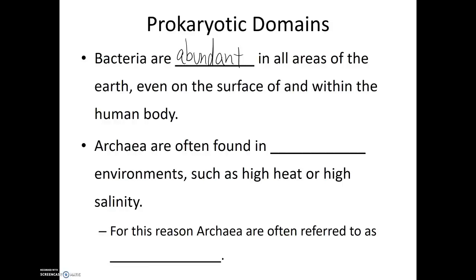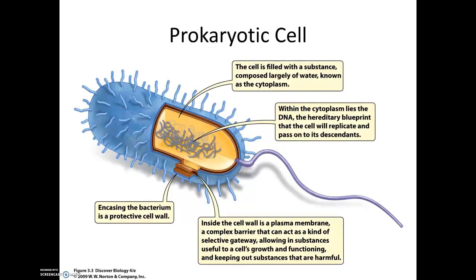Now archaea are also found in abundant areas, but they are most likely to be found in extreme environments — environments that aren't normally conducive to life, such as high heat or high salinity. It's for this reason that archaea are often referred to as extremophiles. When we look at the general diagram of prokaryotic cells, they do not have internal compartments, but that doesn't mean they are unorganized. They still have cellular structures, boundaries, and regions which contain their genetic material — it's just that the genetic material isn't bound in a compartment; instead it floats within the cytoplasm, the liquid internal filling of the cell.